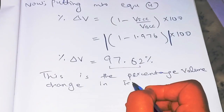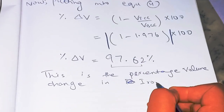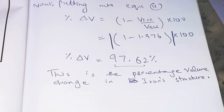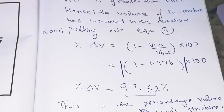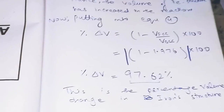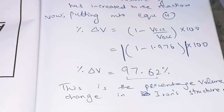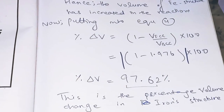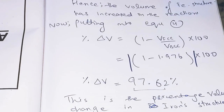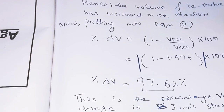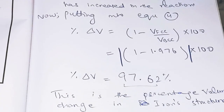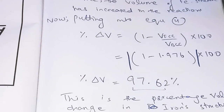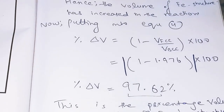That is the percentage volume change in iron's crystal structure. I hope you got it — like, share, and subscribe. I have a separate playlist with all problems from the Callister book. If you can't find a problem you're looking for, let me know and I'll upload it. Take care and goodbye.